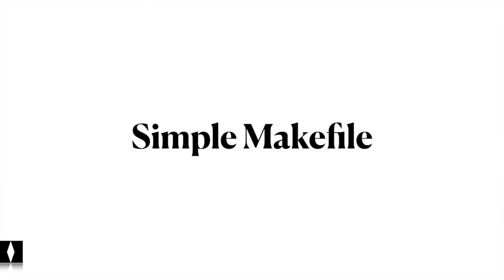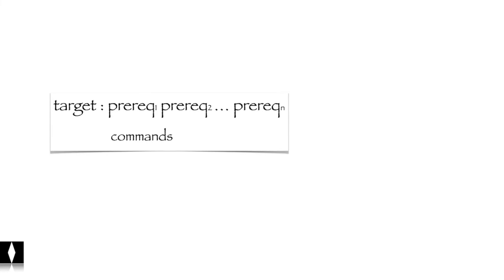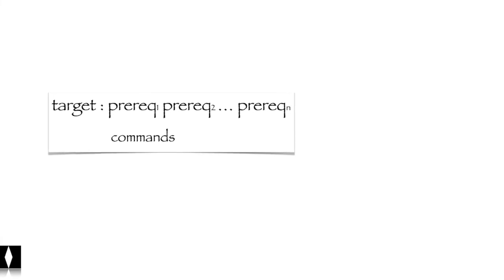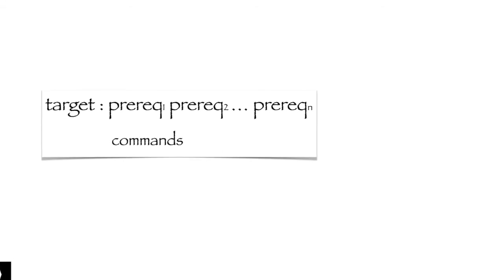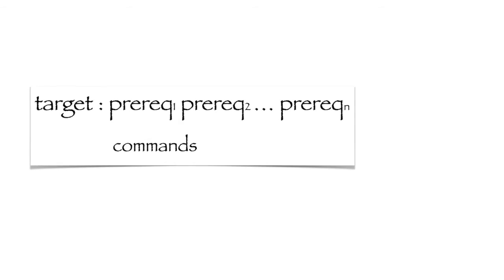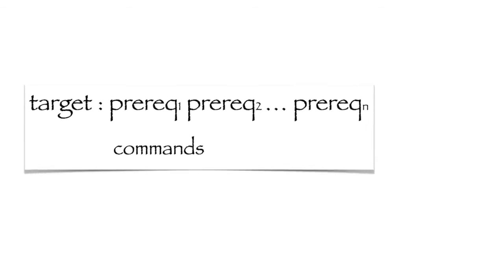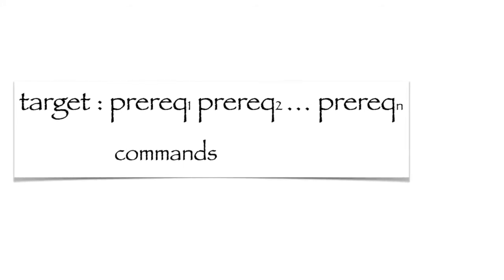Now we will see the basic rule in a makefile and write a simple one. A makefile contains a set of rules used to build an application. The first rule seen by make is the default rule. A rule consists of three parts: target, prerequisites, and commands. The target is the output file or action; prerequisites are the required files to generate the target; and commands generate the target from prerequisites.